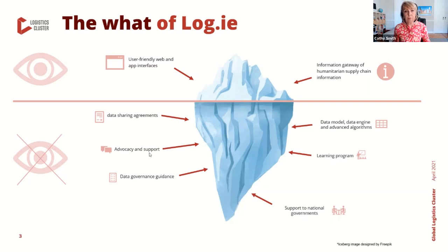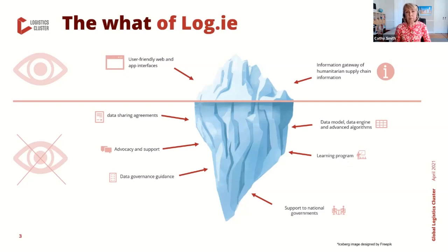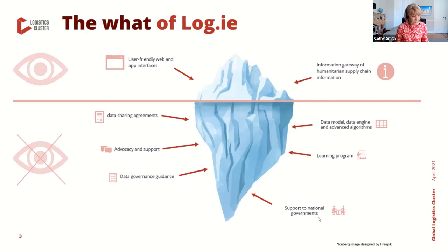We have also developed a data engine and advanced algorithms to process incoming data. We support and advocate with humanitarian partners to share logistics information by participating in meetings, organizing round tables, and creating workshops — to spread the word of LoCate, to adapt it to the needs of the humanitarian community, and to make LoCate part of this community. We have also developed a learning program to support information management officers, and anyone involved in data governance, to learn how to edit and validate information according to the same values and principles.